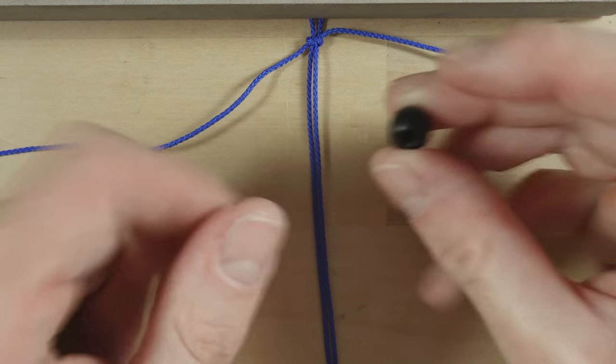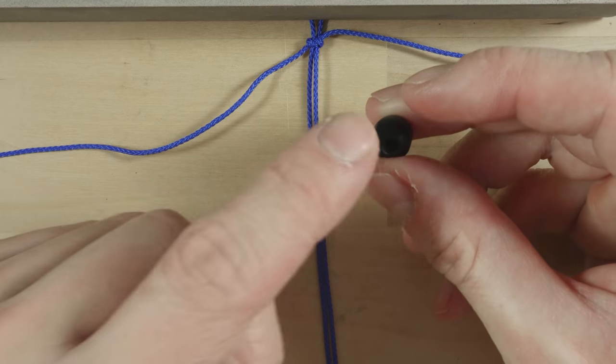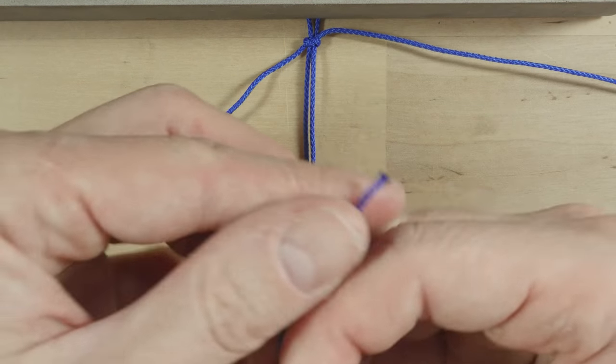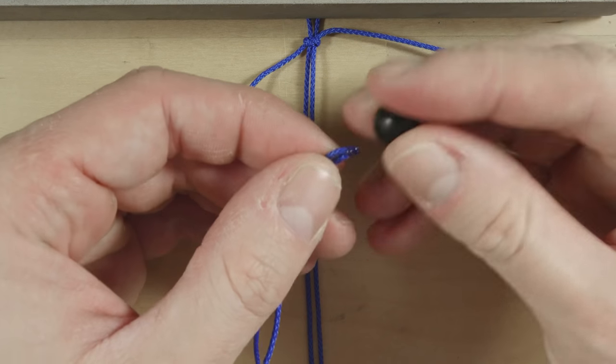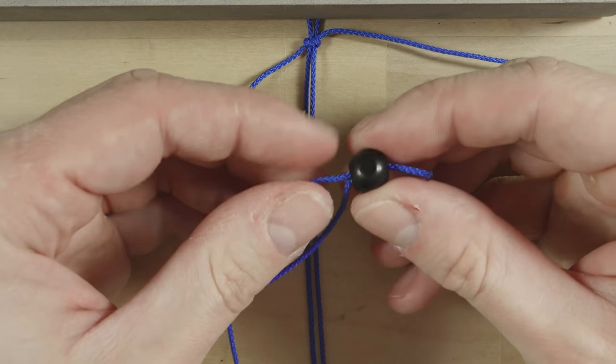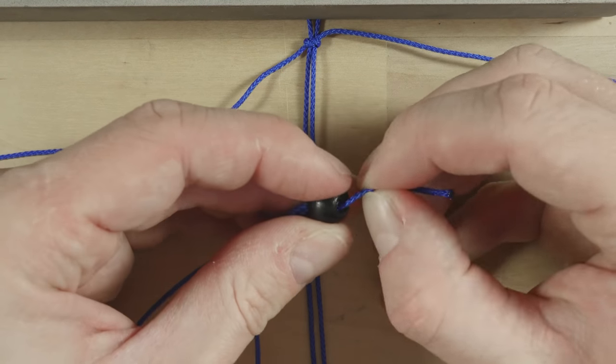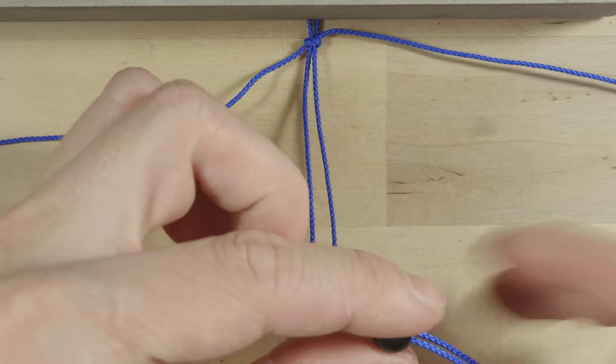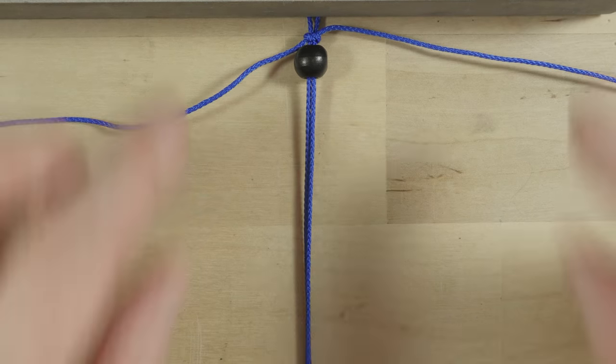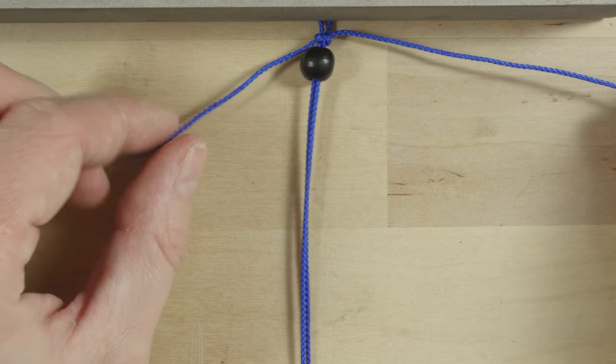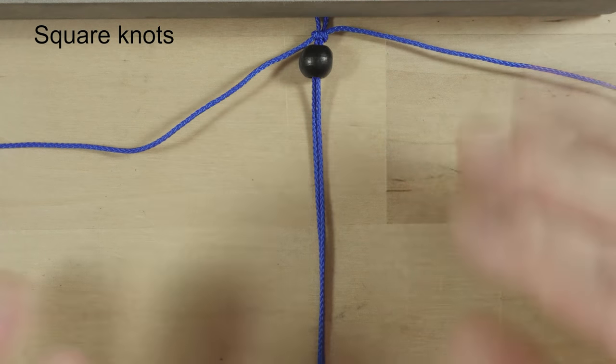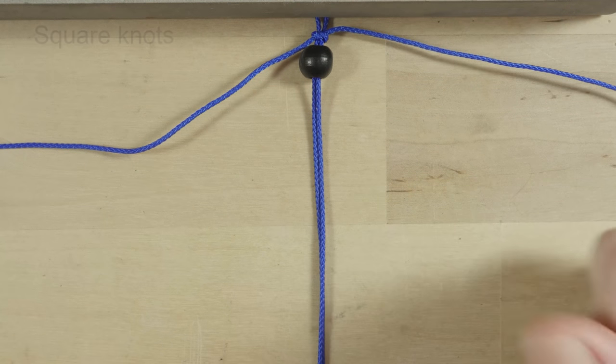Then, pick up a bead if you're using one and attach it onto the two ends of your short cord. Like this. We are now going to begin a series of square knots. These are also called cobra knots.